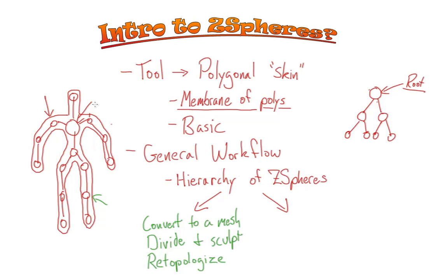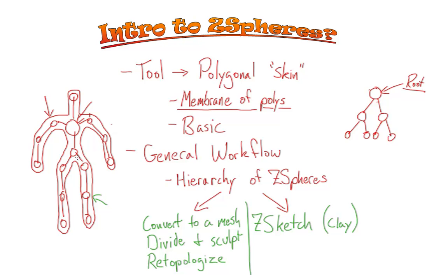That is one avenue for workflow. The other avenue is ZSketching. ZSketching is kind of like working with infinite clay. Basically, you take a Z-Sphere hierarchy — your little armature of Z-Spheres — and you paint volume over the surface of those Z-Spheres and build something up, which is very nice.